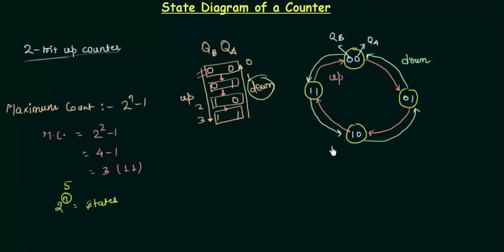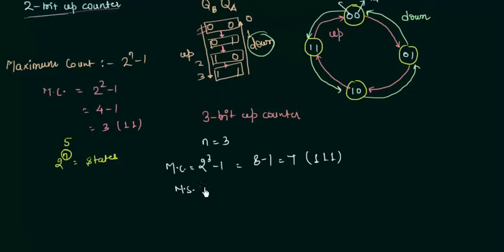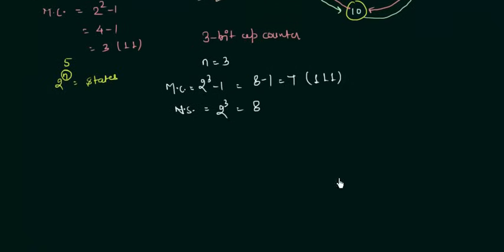If I ask you to make the state diagram of a 3-bit up counter, you again find the number of states, the maximum count, and follow the same process. For a 3-bit up counter, n equals 3. The maximum count is 2 to the power 3 minus 1, which is 8 minus 1, equal to 7. The binary equivalent of 7 is 1 1 1. The number of states is 2 to the power 3, which is 8.